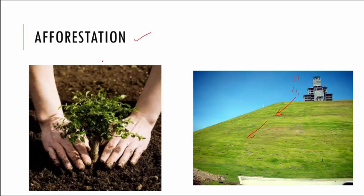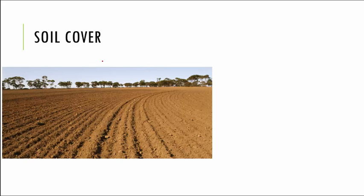The second method is by soil cover. Generally after a crop is harvested or before the next crop is sown, the soil remains bare. If you see this image you can see that the soil is completely bare.